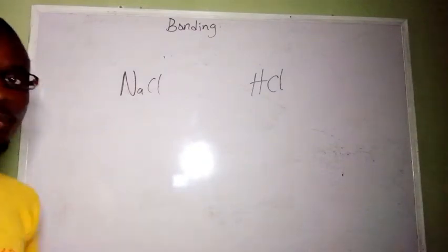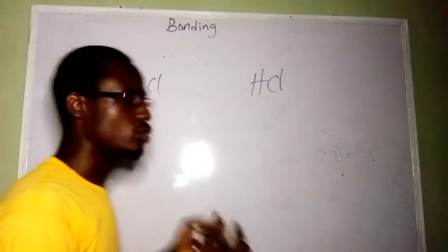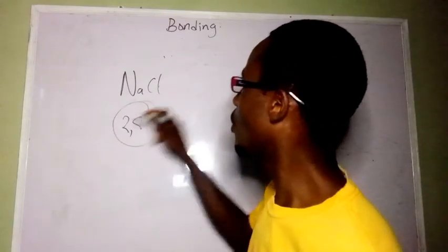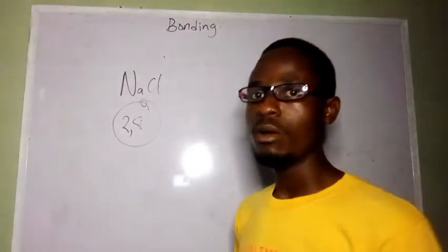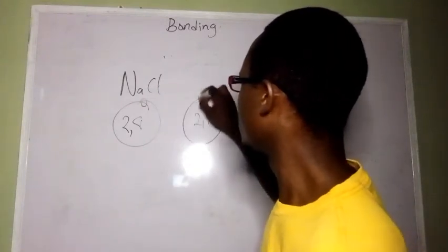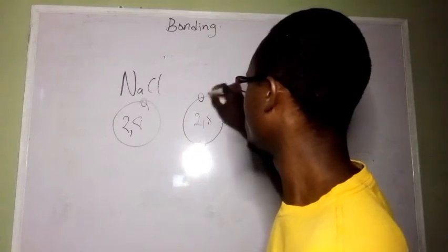In sodium chloride, we have sodium and chlorine. Sodium has two shells, then you have one electron in the outermost shell. While in chlorine we have two shells, then it has seven electrons in the outermost shell.